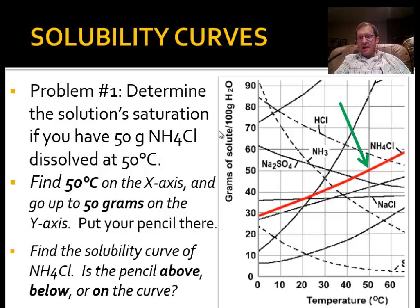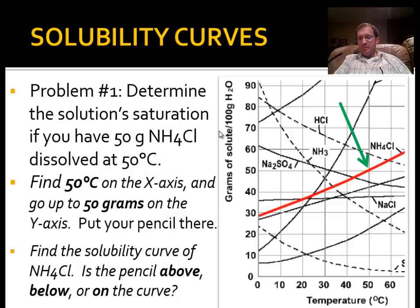To determine the solution's saturation, find 50 degrees Celsius on the x-axis and 50 grams of solute on the y-axis, and put your pencil point right at where those two values meet. The green arrow is pointing to that spot. Since this question is about ammonium chloride, find the solubility curve for NH4Cl — highlighted in red on screen. You can see the green arrow is pointing right to where 50 degrees and 50 grams meet, and it's right on the curve for ammonium chloride. That represents a saturated solution.